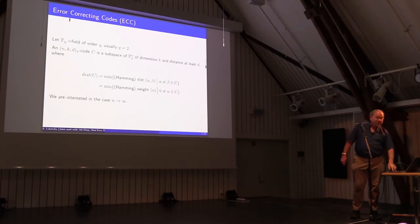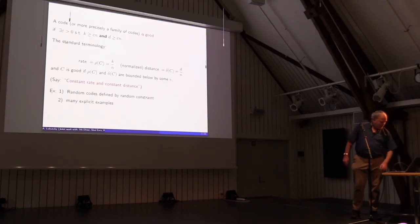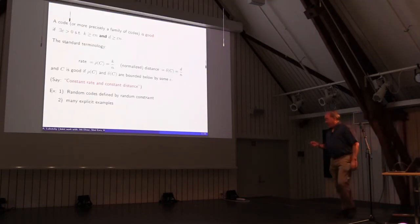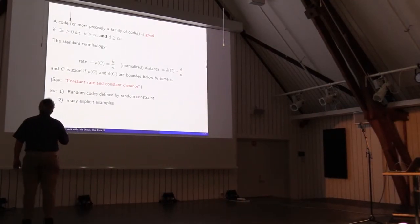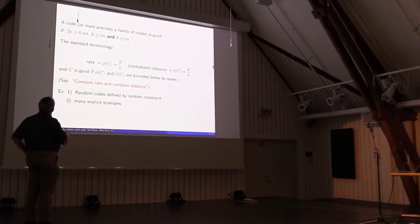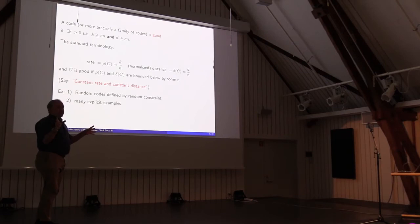So that's an important engineering problem, but we are not engineers, we are mathematicians. So we will talk about the case when N is going to infinity. From now on, even if I use the word 'code,' I always mean a family of codes where N is going to infinity. When I say a code is good, the standard terminology means that there exists some epsilon greater than zero such that the dimension of the code is at least epsilon N and the distance is at least epsilon N — namely, both the dimension and the distance grow linearly with N.